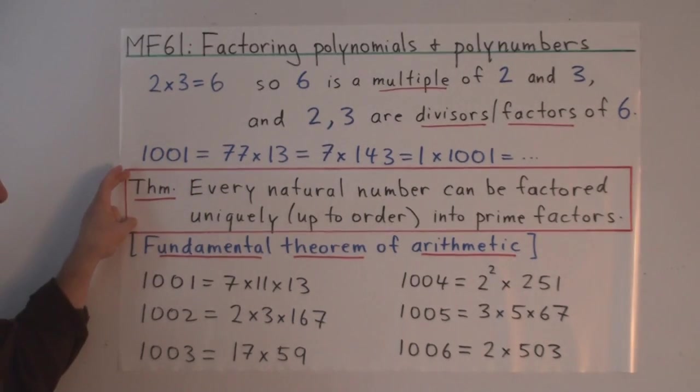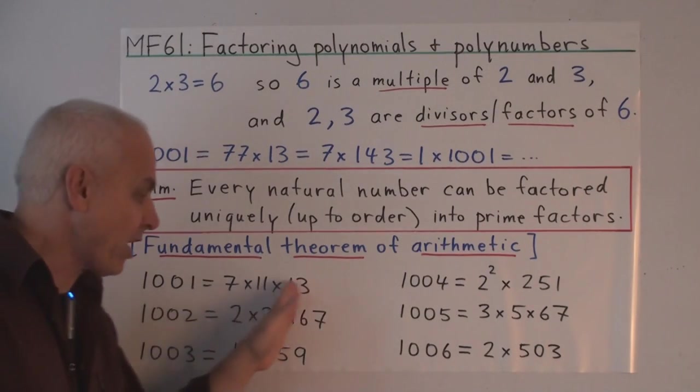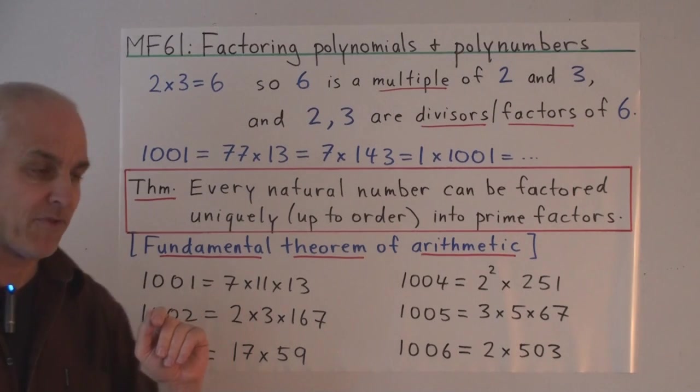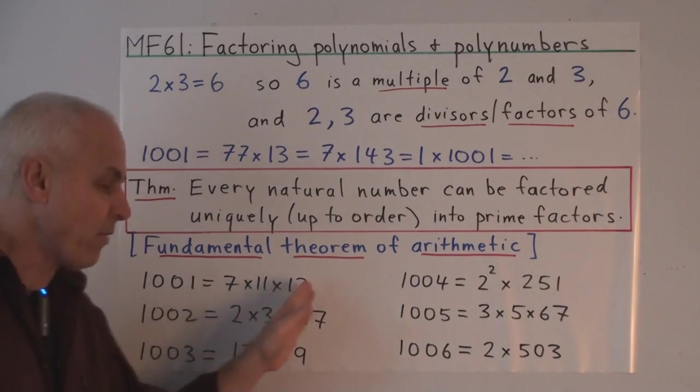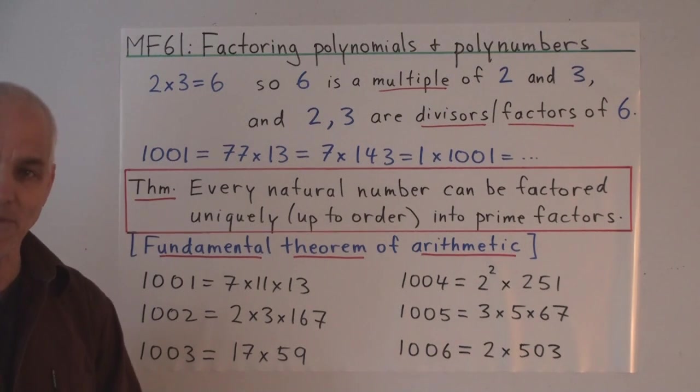So the fundamental theorem of arithmetic means that we can express every natural number as a product of prime numbers. And there's only one way of doing that, up to the order in which we present those primes.